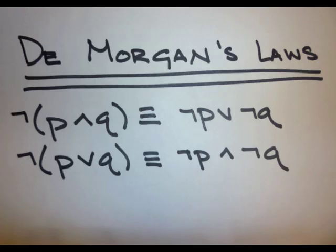De Morgan's laws: the negation of (P and Q) is logically equivalent to not P or not Q. The negation of (P or Q) is logically equivalent to not P and not Q.